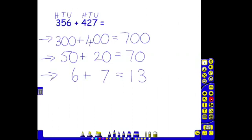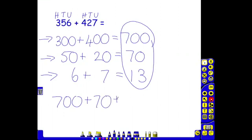And because we've split the numbers up, we've now got to put them back together to find the final answer. Seven hundred, add 70, add 13.